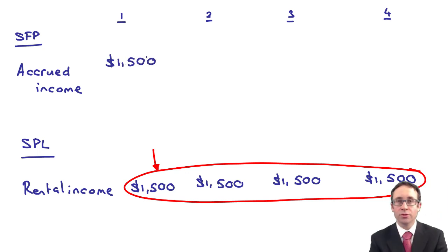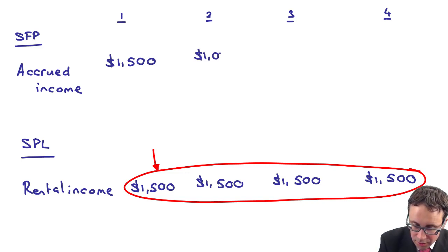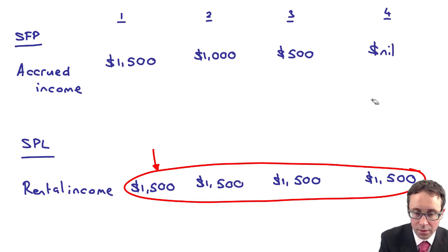Then on the accrued income this is what happened. In year one we started out with $1,500. In year two that will decrease to $1,000. Year three that's $500 and then finally in year four you should find that has come down to zero.